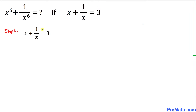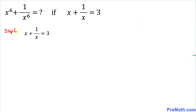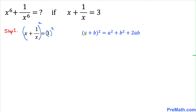Here's the very first step. I have copied down this part right over here: x plus 1 over x equals to 3. And now we are going to take the square on both sides — square on the left hand side and the square on the right hand side. We are going to use this rule: a plus b square equals a square plus b square plus 2ab.